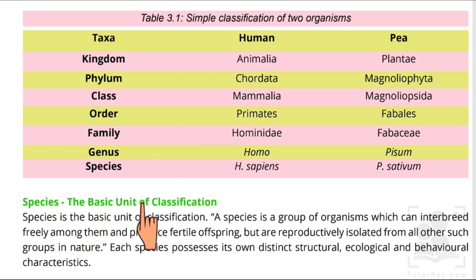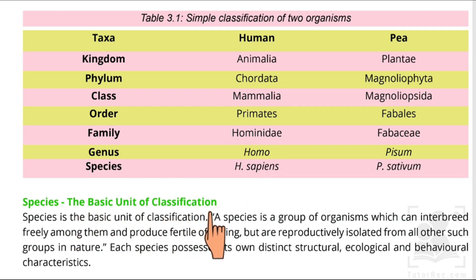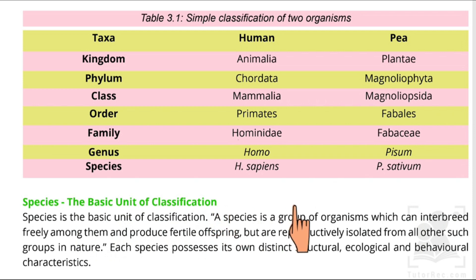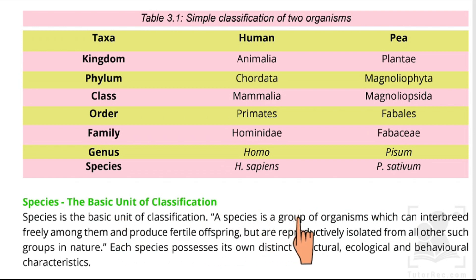The species is the basic unit of classification. A species is a group of organisms which can interbreed freely among themselves and produce fertile offspring, but are reproductively isolated from all other such groups in nature. Each species possesses its own distinct structural, ecological, and behavioral characteristics.